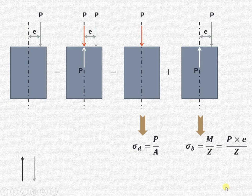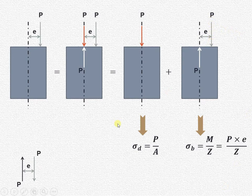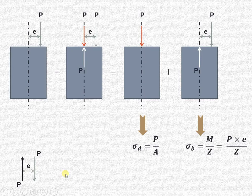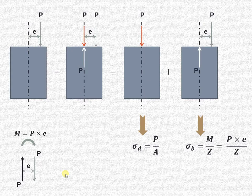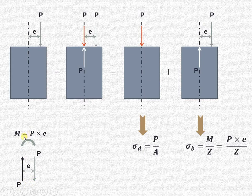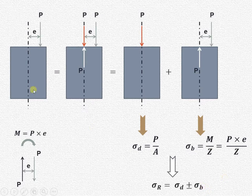Now let us see how it is producing the moment. The downward acting force is p, the upward acting force is also p, and the distance between these two is e. In mechanics, two equal unlike parallel forces produce a couple, and the moment of the couple is force multiplied by the couple arm. Here e is the couple arm. The arrow of each force goes in the clockwise direction, so it produces a clockwise moment equal to force multiplied by eccentricity e. In place of moment we substitute p into e.